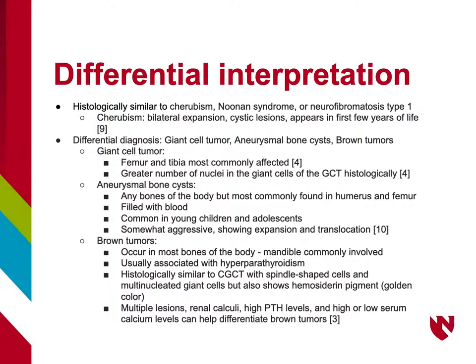Central Giant Cell Granuloma appears histologically similar to Cherubism, Noonan Syndrome, and Neurofibromatosis Type 1. Unlike Central Giant Cell Granuloma, Cherubism shows bilateral expansion, cystic lesions, and appears in the first few years of life. Differential diagnoses for Central Giant Cell Granuloma include Giant Cell Tumor, aneurysmal bone cysts (ABCs), and brown tumors.